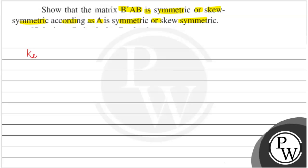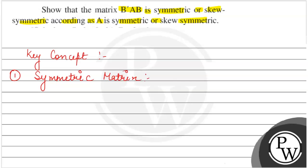The first key concept used is symmetric matrix. The concept of a symmetric matrix says that the given matrix A is equal to A transpose. In the case of transpose, the rows become columns and columns become rows.